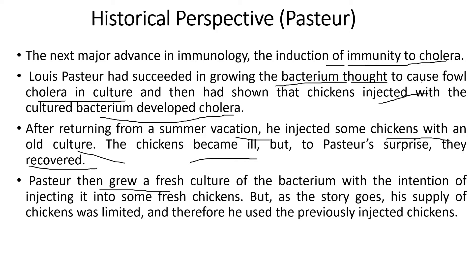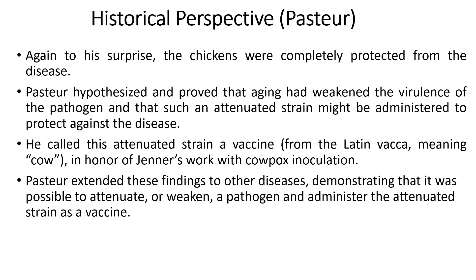Pasteur then grew a fresh culture of the bacteria with the intention of injecting it into fresh chickens, but his chicken supply was limited and he used the previously injected chickens. To his surprise, the chickens were completely protected from the disease. Pasteur hypothesized and proved that aging had weakened the virulence of the pathogen, and that such an attenuated strain might be administered to protect against disease.